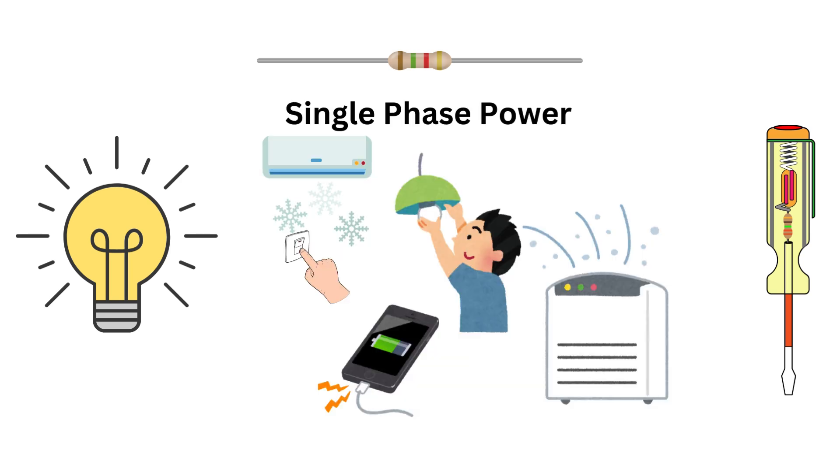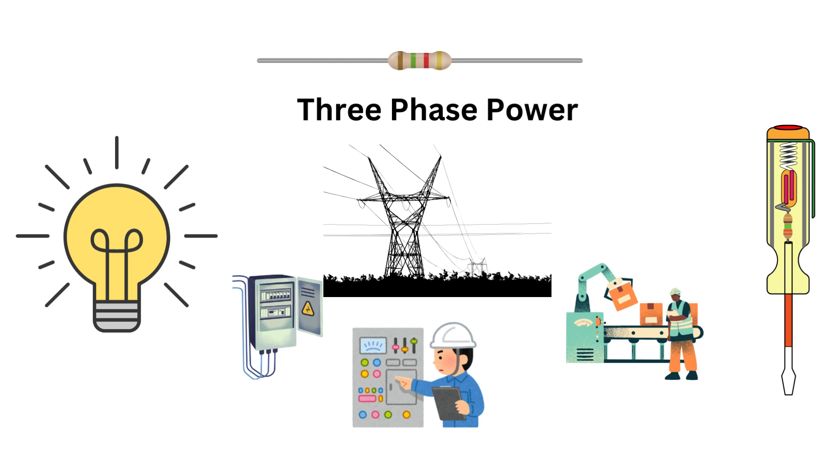For example, single phase power is what you use to power your refrigerator or laptop. Three phase power is what keeps a factory's conveyor belts and large motors running smoothly.